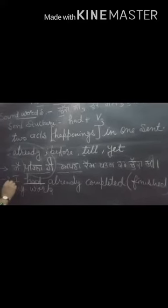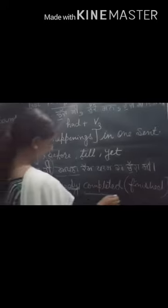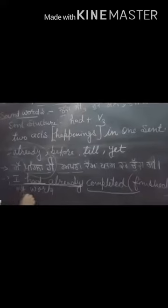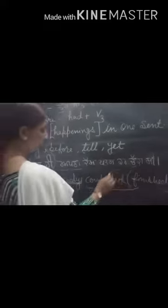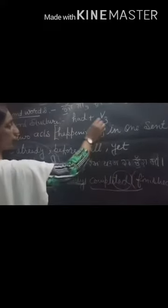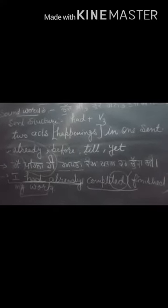In the first sentence, I had already, and completed my work is the second part of the sentence. Here we use the third form which I mentioned. In the first sentence we will use had, same as another sentence.